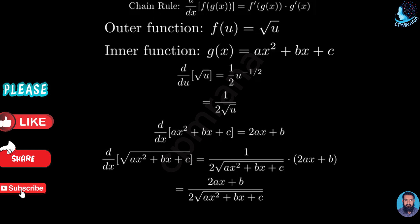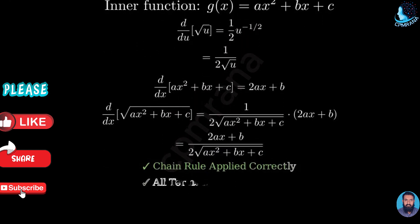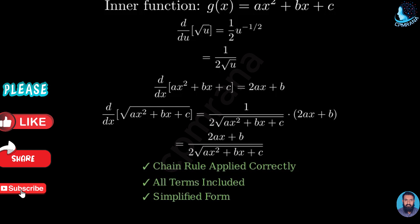Let's verify our work. We used the chain rule correctly by multiplying the derivative of the square root function by the derivative of what was inside it. Our final answer maintains the proper form and includes all terms from both the numerator and denominator.